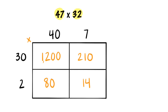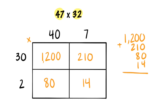Lastly, we're going to add up our partial products from all the boxes. 1,200 plus 210 plus 80 plus 14. So, we know the product is 1,504.